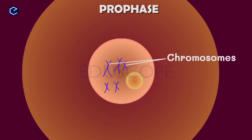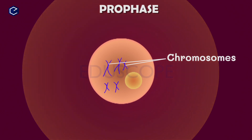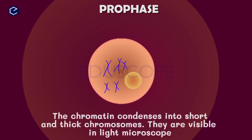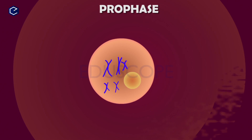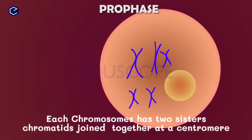The chromatin condenses and chromosomes become shorter and thicker. In prophase, the chromatin condenses into short and thick chromosomes, and these chromosomes become visible under a light microscope. Each chromosome also consists of two sister chromatids.